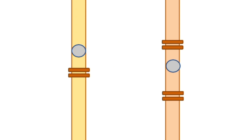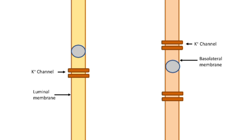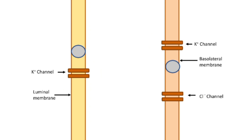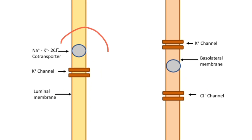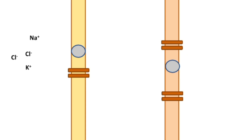Now let us understand the whole mechanism of high ceiling diuretics diagrammatically. This is the luminal membrane and this is the basolateral membrane. There are two potassium channels — one on the luminal membrane and another on the basolateral membrane. There is one chlorine channel on the basolateral membrane. This is the sodium, potassium, and chlorine co-transporter on the luminal membrane, and the sodium-potassium ATPase pump on the basolateral membrane.